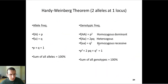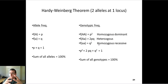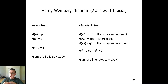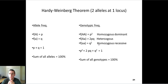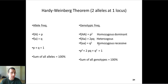The Hardy-Weinberg theorem is basically based on the math we already did two videos ago, when you actually try to predict what's going to happen in the next population based on the previous generation. They call the allele frequency of the dominant allele P, and the allele frequency of the recessive allele Q — it goes in alphabetical order, so it's pretty easy to remember.